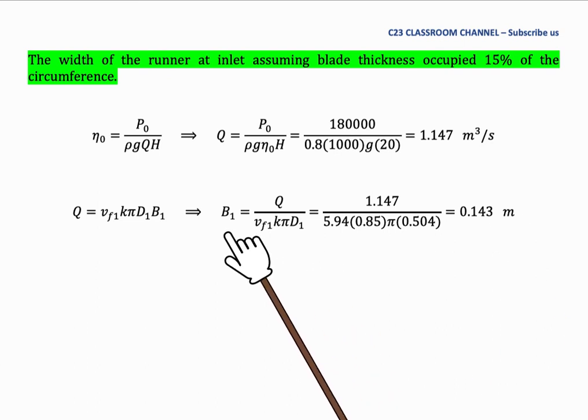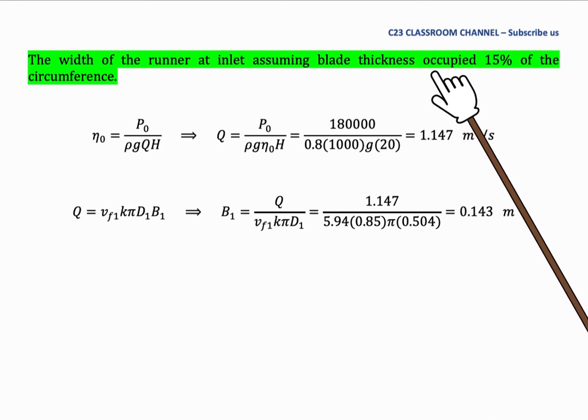To calculate the blade width at inlet, we use this equation. We rearrange and get B1 equal to Q over VF1 K pi D1. We substitute all the values and make sure the value of K is 0.85 because blade thickness only occupies 15 percent of the circumference.